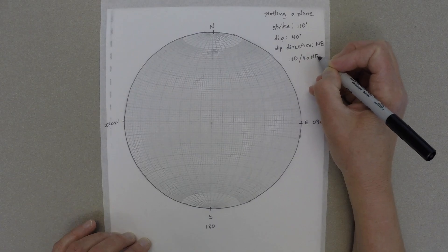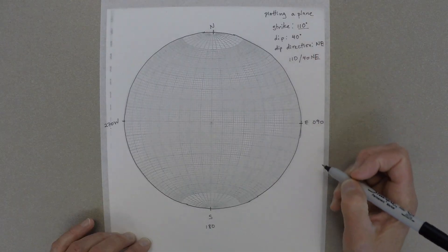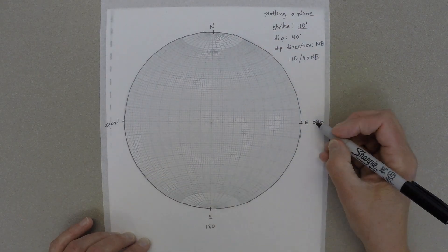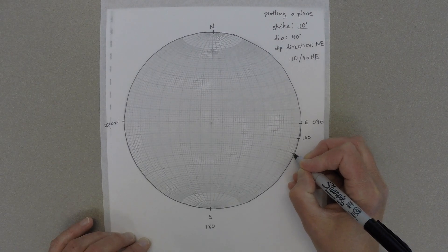The first thing you do when you're going to plot a plane is you start with the strike. In this case, our strike is 110 degrees. So we're going to look around the primitive of the stereo net and find the angle of 110 degrees, which plots right here.